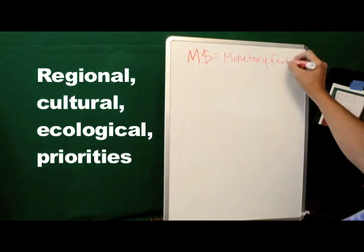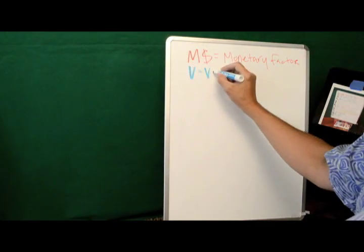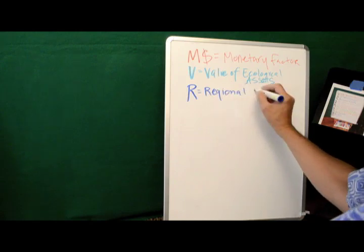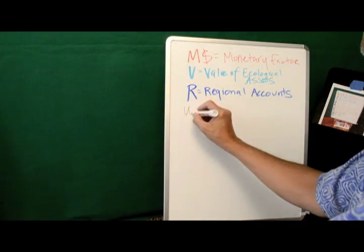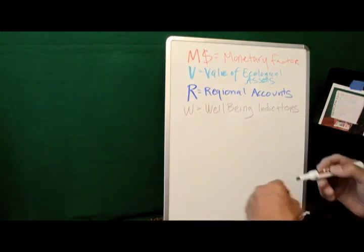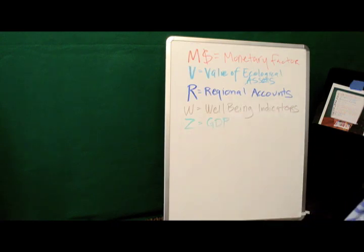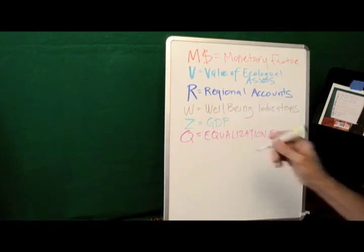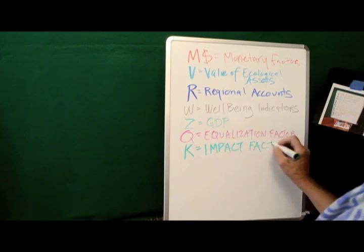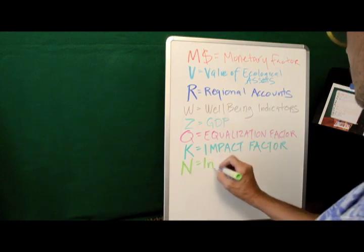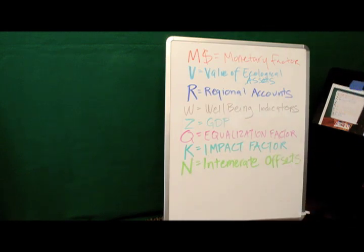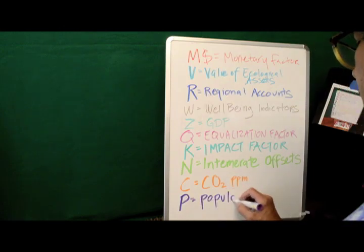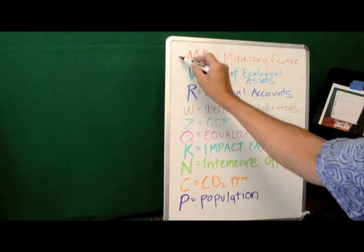Here is the list of variables that I will be using to describe Intemarate accounts. M is the monetary factor, which is the sum value of this accounting framework. Note that this is a regional accounting factor, rather than a national accounting factor. V is the value of ecological assets. R is our regional accounts. W are the well-being indicators. Z is our real nominal GDP. Q is our equalization factor. K is the impact factor. N is the Intemarate offsets. C is the CO2 parts per million in the atmosphere. And P is population. I'll keep these 10 variables on the screen as a reference.